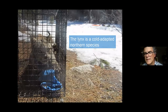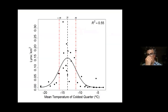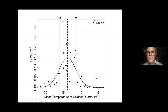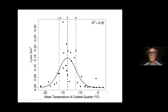On the other hand, lynx is a cold-adapted northern species requiring cold weather. Looking at mean harvest from 1980 to 2010 and comparing it to mean temperature of the coldest quarter, there's a real sweet spot for lynx at around minus 17 to minus 12 degrees Celsius. If it gets too warm, you won't see lynx. It's a species that requires cold conditions to persist.